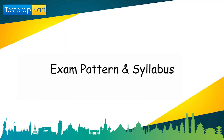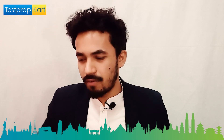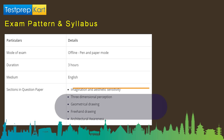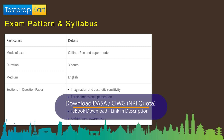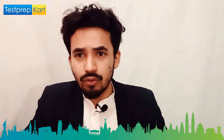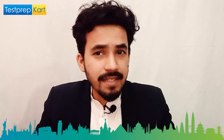Regarding the exam pattern and syllabus: based on the last two years' trends, the duration is three hours, the language is English, and this is an offline pen-and-paper exam. Since you will be using geometry and architecture tools, it cannot be online. There are five sections: Imagination and Aesthetic Sensitivity, Three-Dimensional Perception, Geometrical Drawing, Freehand Drawing, and Architectural Awareness. These are topics covered up to Class 12, giving an advantage to students from a design or NIFT background.